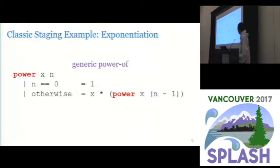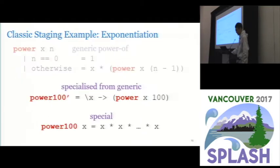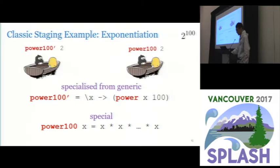Okay, now let's walk through a classic staging example. So here's a generic power function and for clarity we use a Haskell style here. To regularly compute a 100th power we could either specialize a generic program or write a special program.